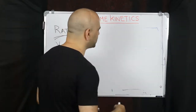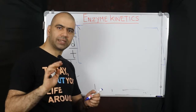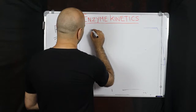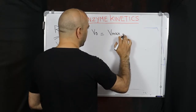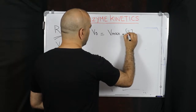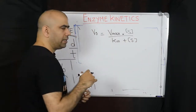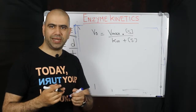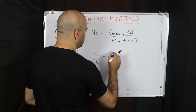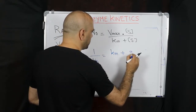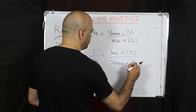The Lineweaver-Burk equation can be derived from the Michaelis-Menten equation. If we take the Michaelis-Menten equation — V0 = Vmax · [S] / (Km + [S]) — and put the equation upside down, we get 1/V0 = (Km + [S]) / (Vmax · [S]). We then separate the numerator on the basis of the plus sign into two terms.